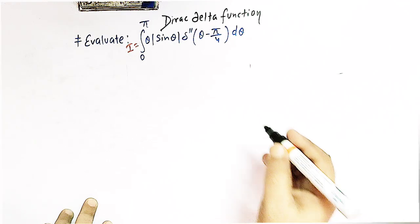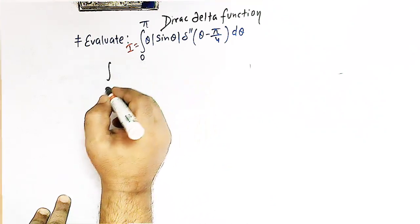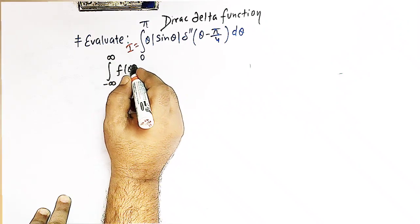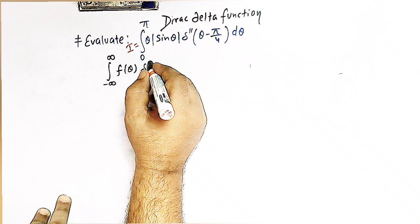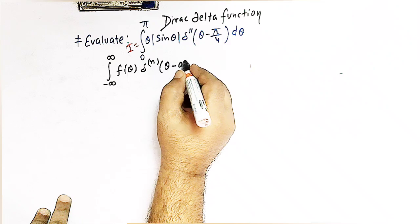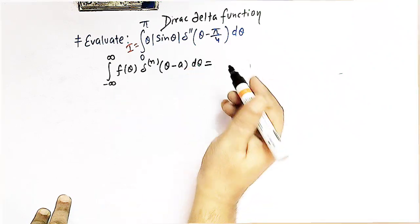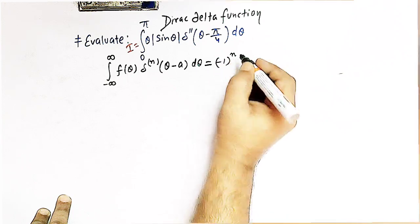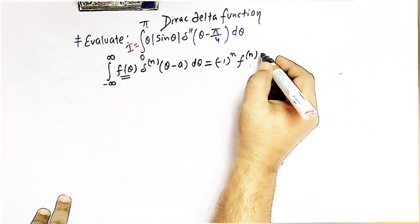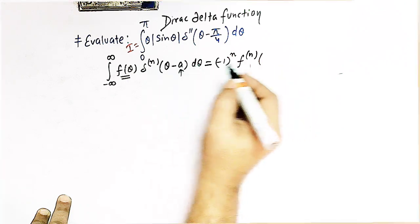We will make use of this property of the delta function: the integral from −∞ to ∞ of f(θ) times the nth derivative of δ(θ − a) dθ equals (−1)^n times the nth derivative of f(θ) evaluated at θ = a.